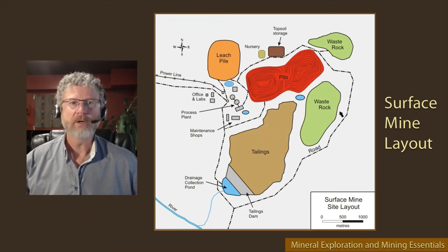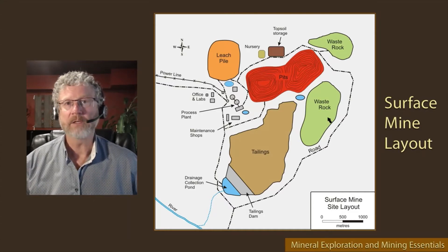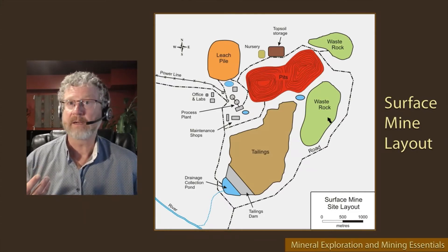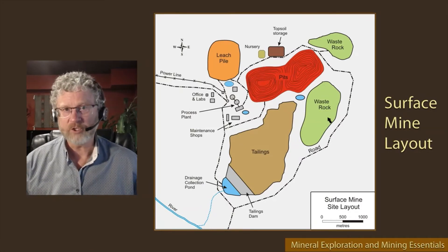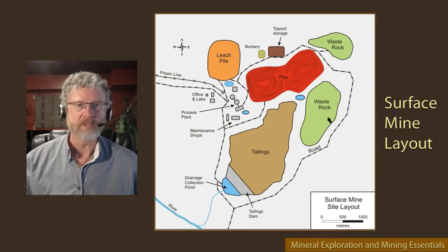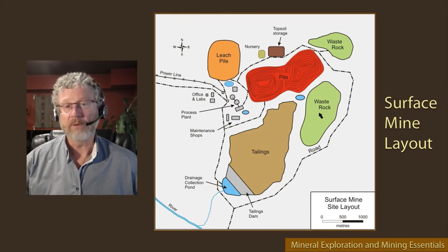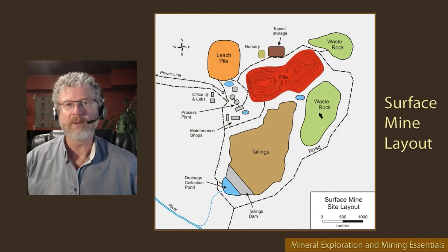The second thing to point out is waste rock. Waste rock is the rock that has to be mined out of the pit to get access to the ore, but it's not rock with sufficient grade to send to the process plant. It's considered to have no mineralization or very low grade below cutoff mineralization.